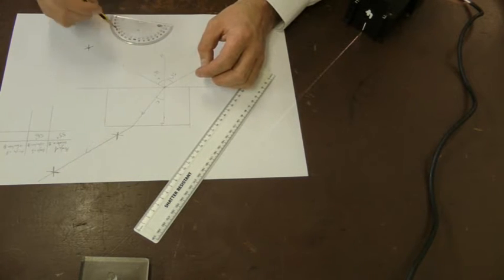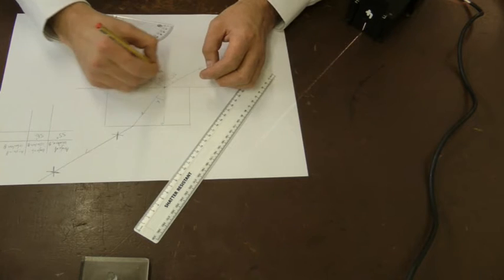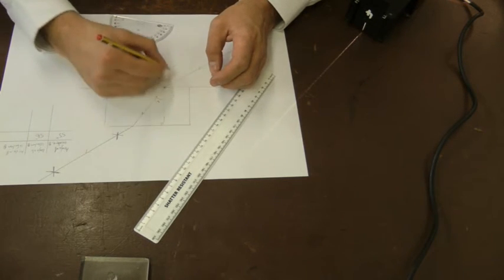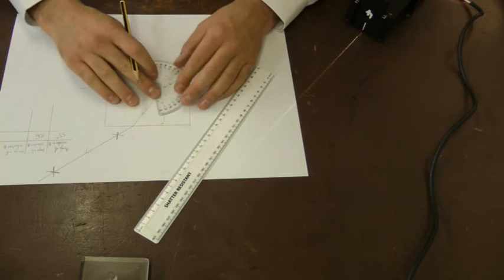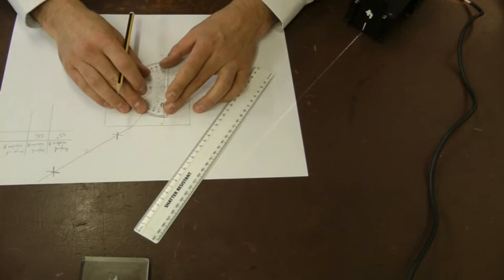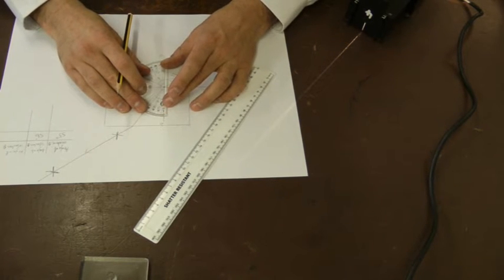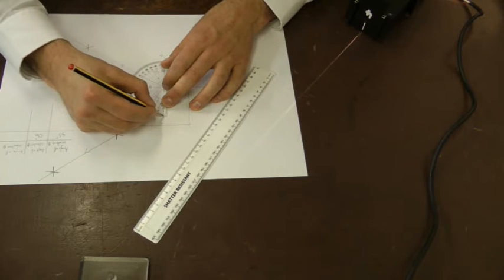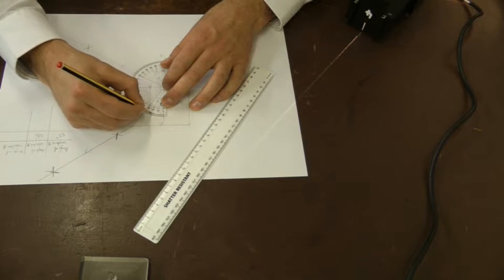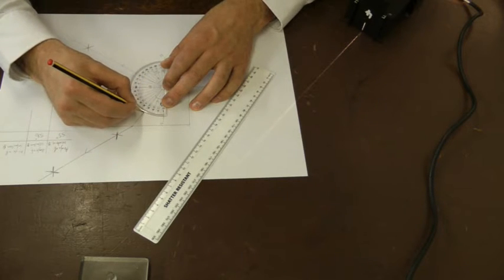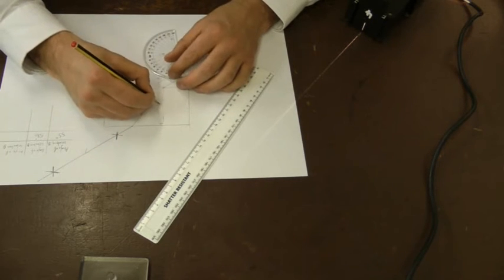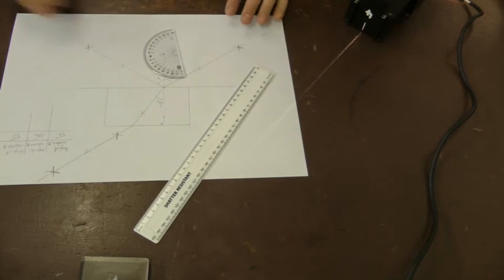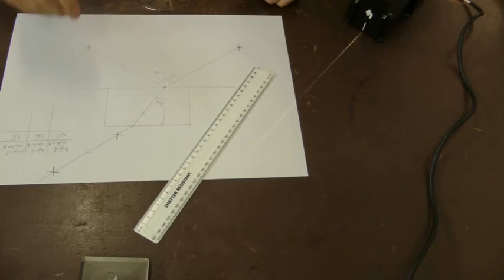And now I want to get my angle of refraction. So this is the first time the ray was refracted. It was refracted again a second time here, but I'm only interested in this first event. And the ray all lined up on the dot. The ray was refracted 0, 10, 20, 30, 33 degrees. So 33 degrees. So I've got all my information for material number 1.